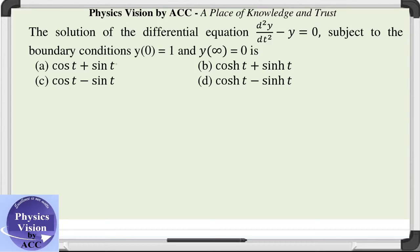Welcome back dear students to the physics vision classes. The given question is we need to calculate the solution of this differential equation d²y/dt² - y = 0, subject to the boundary conditions y(0) = 1 and y(∞) = 0.